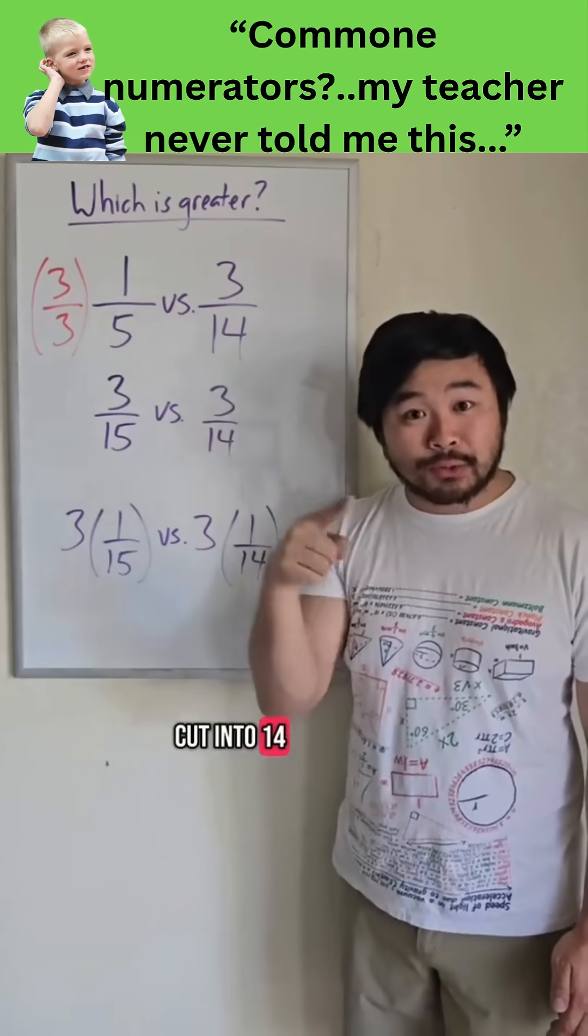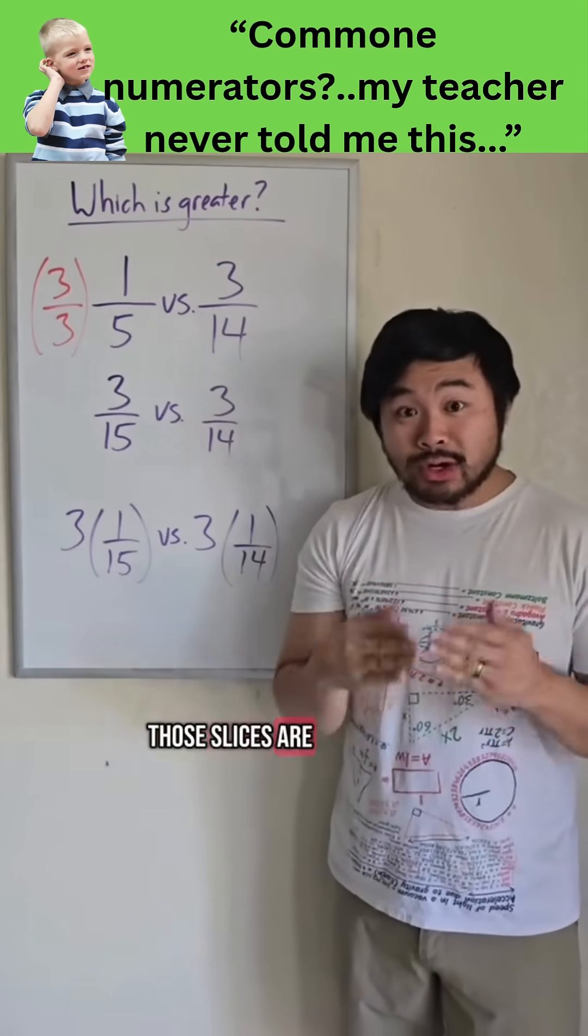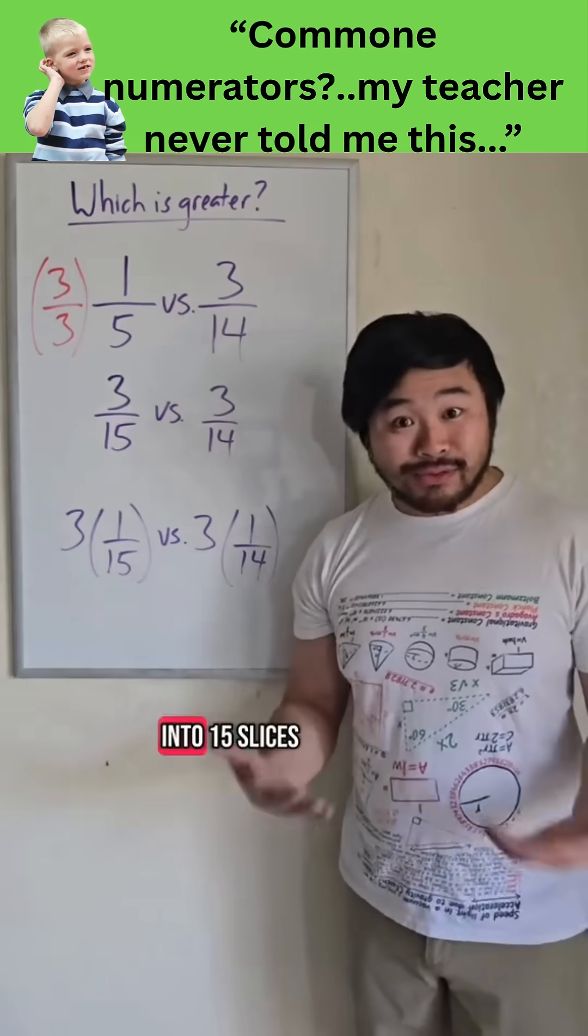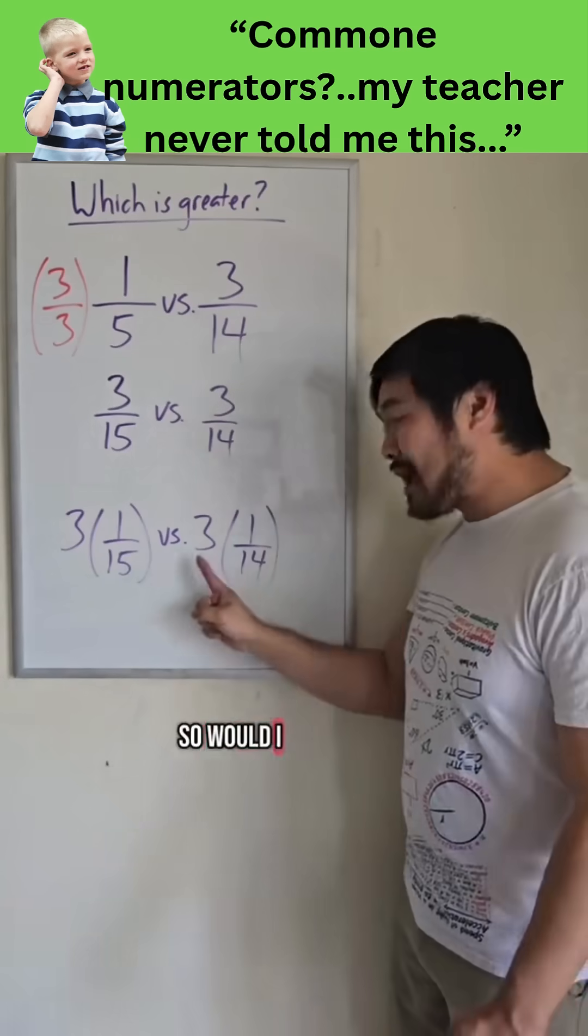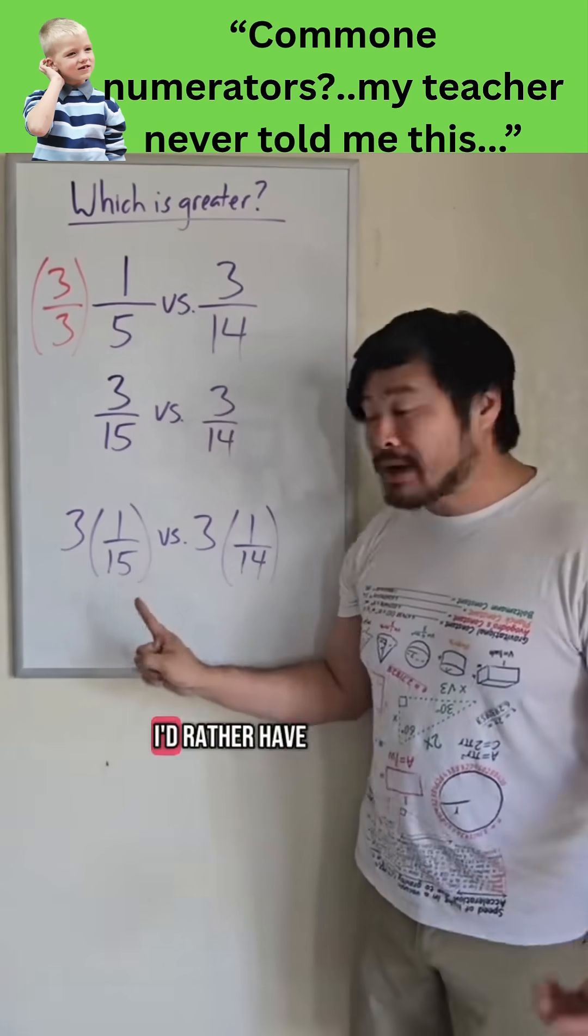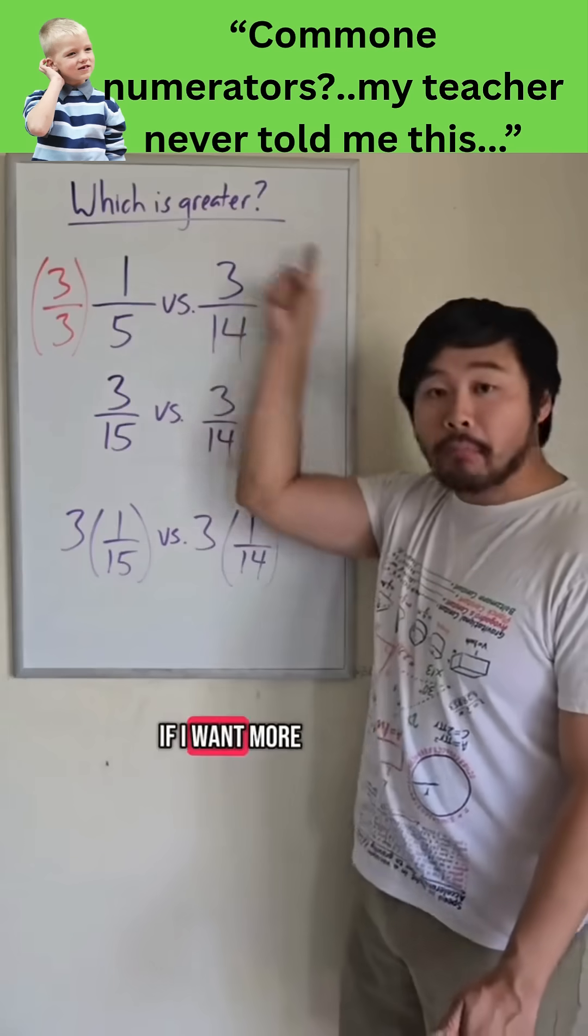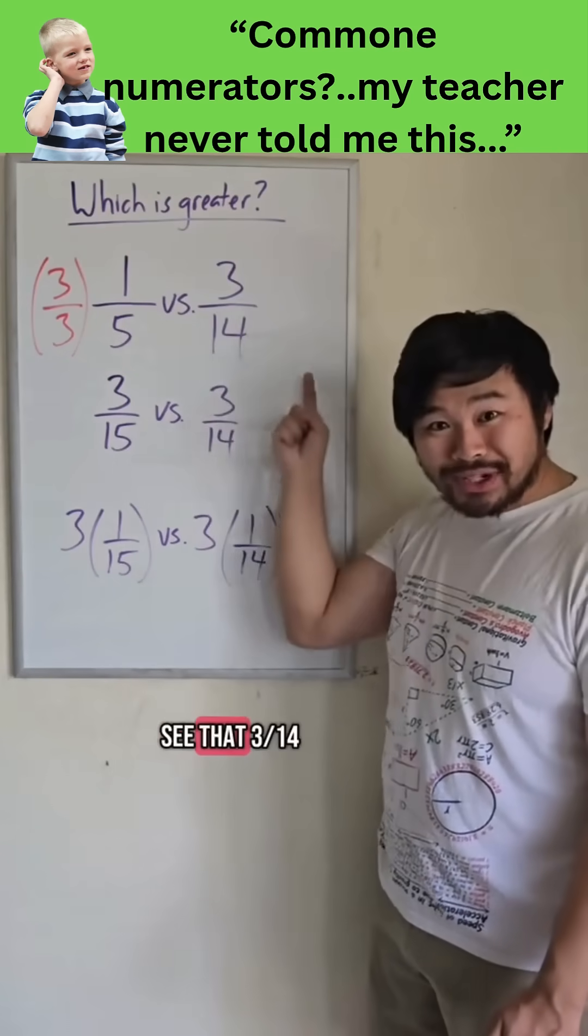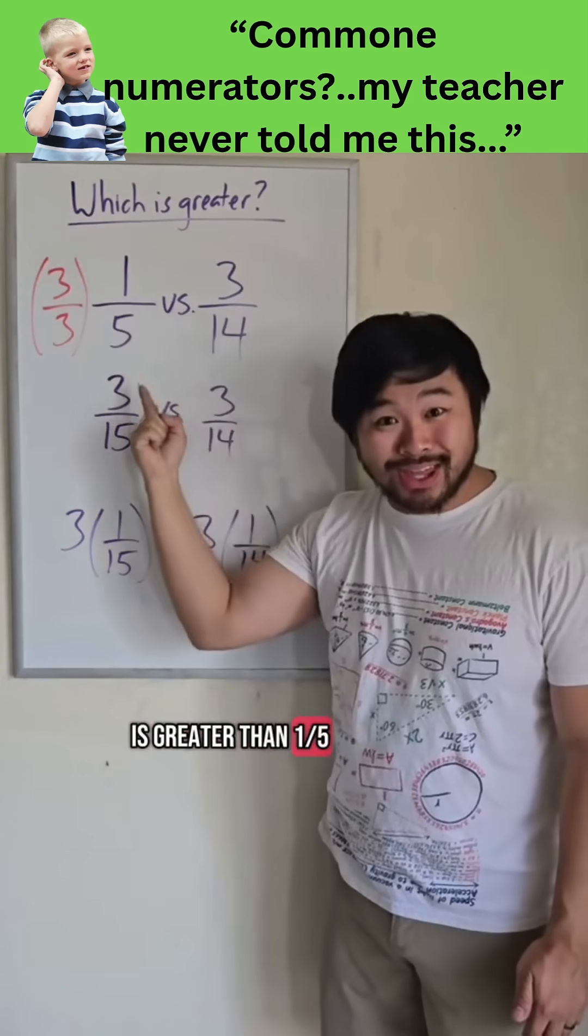If I have a cake cut into 14 equal slices, those slices are going to be bigger than if I cut it into 15 slices. So would I rather have 3 bigger slices or 3 smaller slices? I'd rather have 3 bigger slices if I want more. So I can see that 3/14 is greater than 1/5.